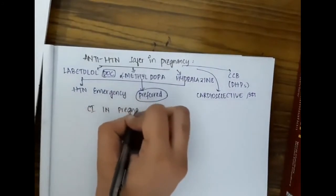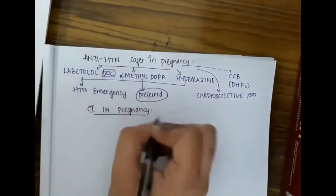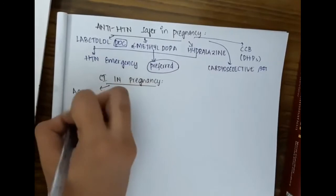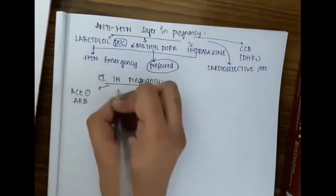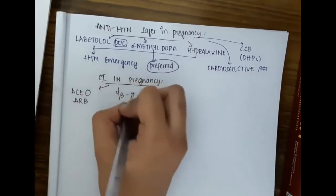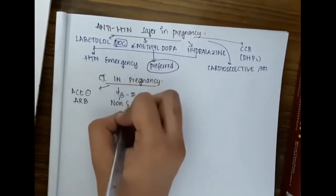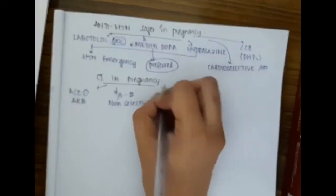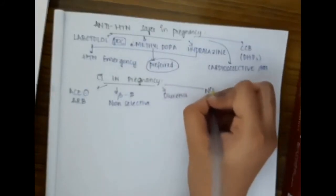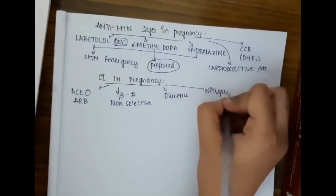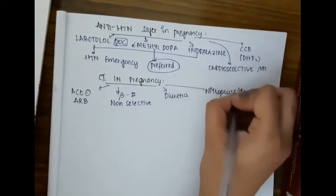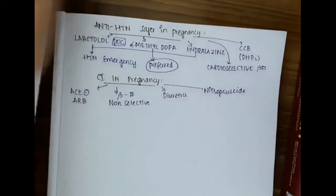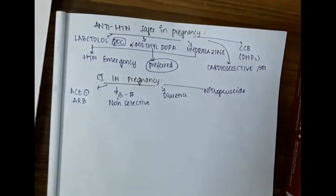Regarding contraindications in pregnancy: ACE inhibitors and angiotensin receptor blockers are contraindicated. Non-selective beta blockers, diuretics, and nitroprusside are also contraindicated in pregnancy.